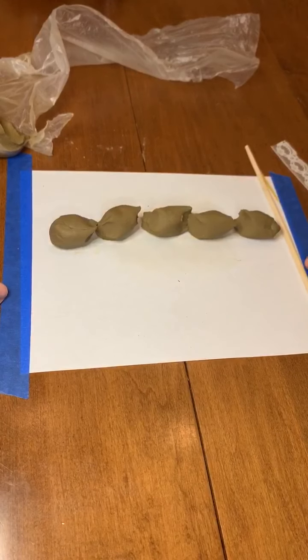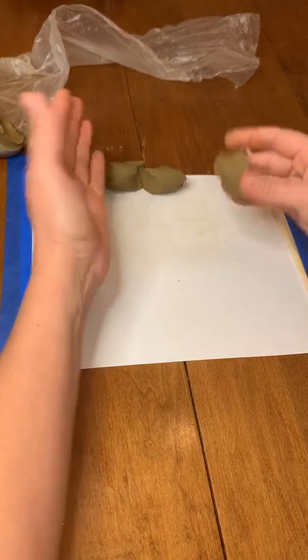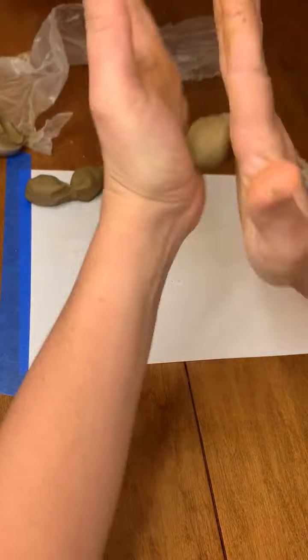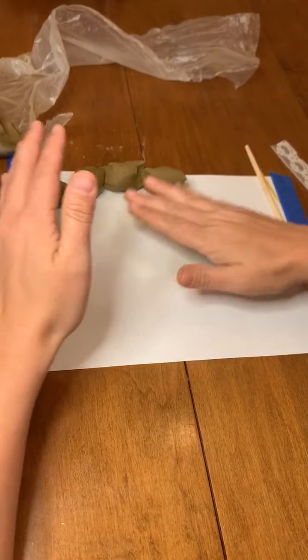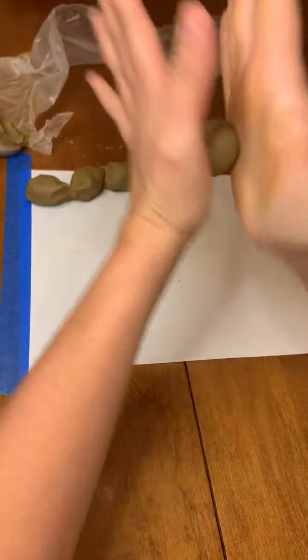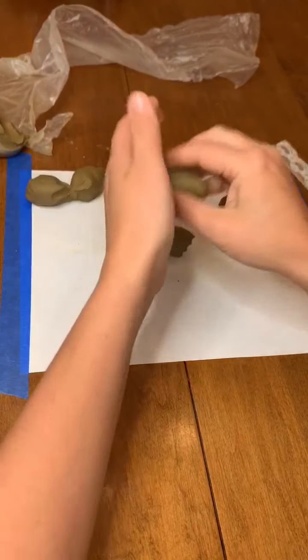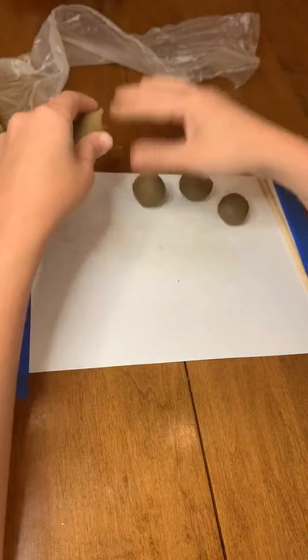Okay, now I have five pieces. And then each of these I'm going to take and I'm going to make a ball. So I can make a ball in my hand or I can make a ball on the table. Just roll it around and roll these around. And they don't have to be perfect.